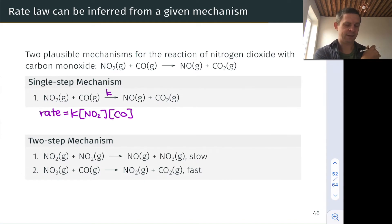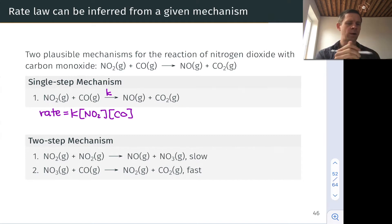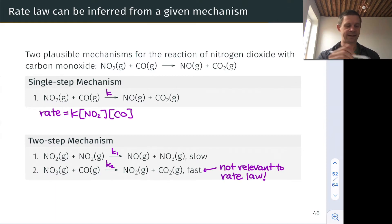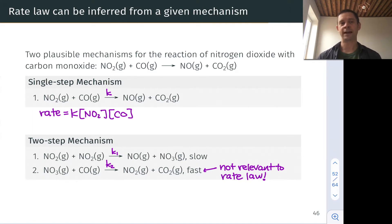For the two-step mechanism, this is a little more complicated because we've got two steps. How do we know which step drives the rate? Let's first define the rate constants for each step, K1 and K2. The first step is slow and the second step is fast. The fast step is actually not relevant to the rate law — the slow step is what drives the reaction rate.